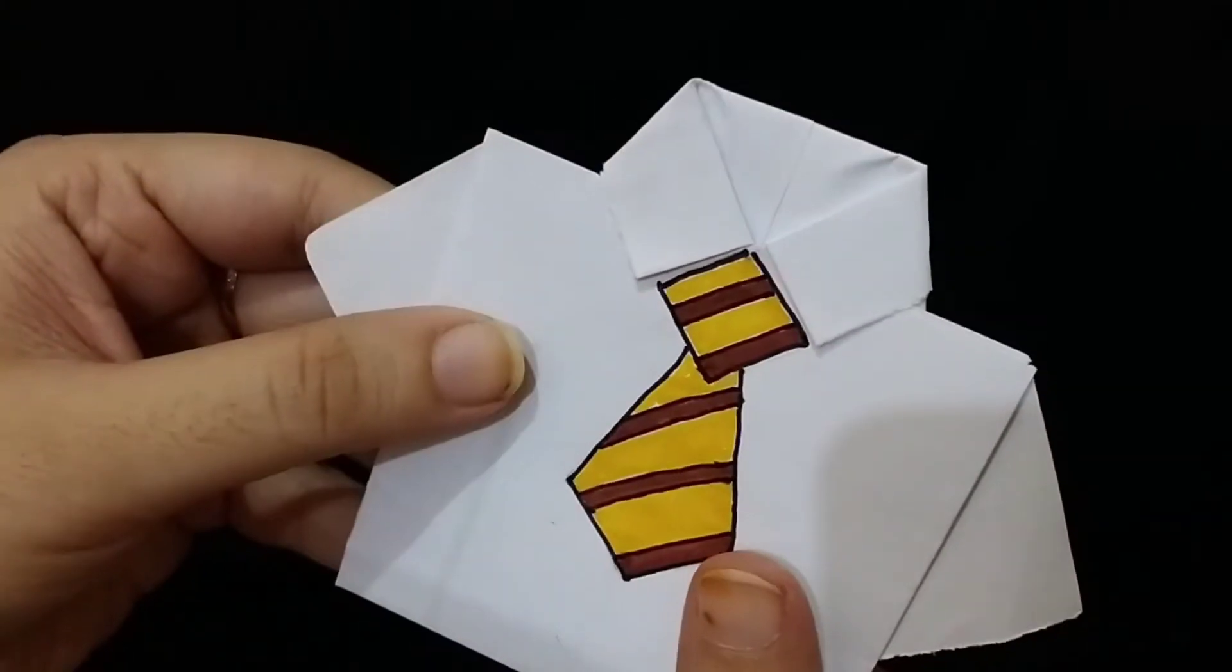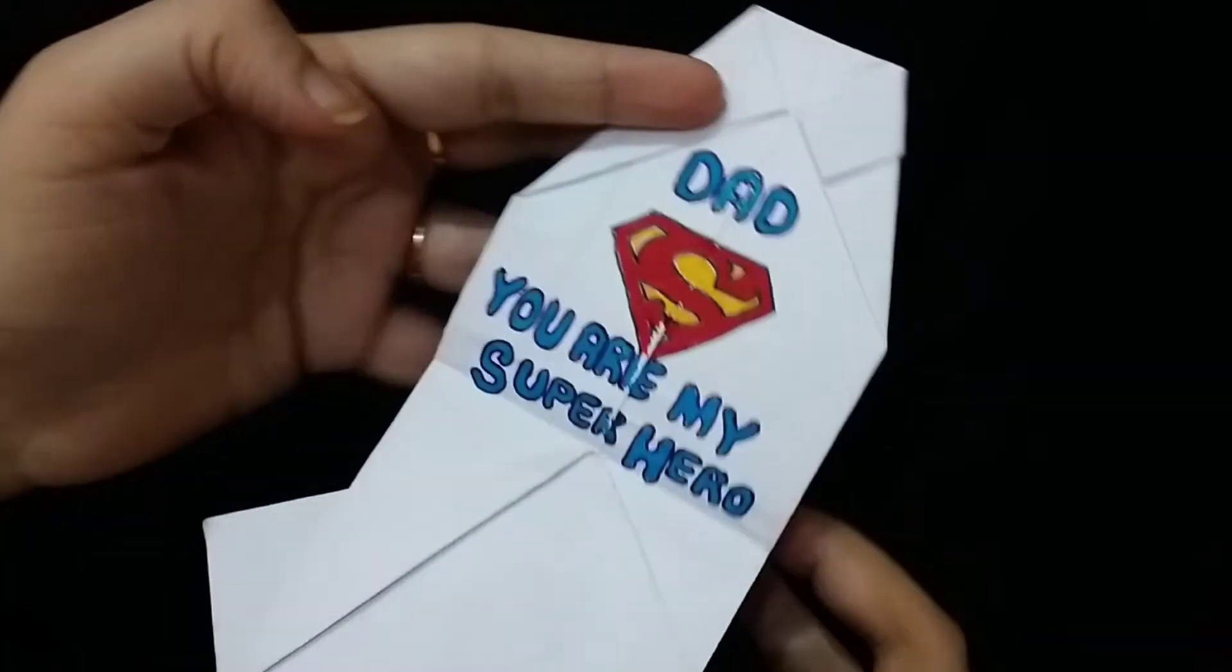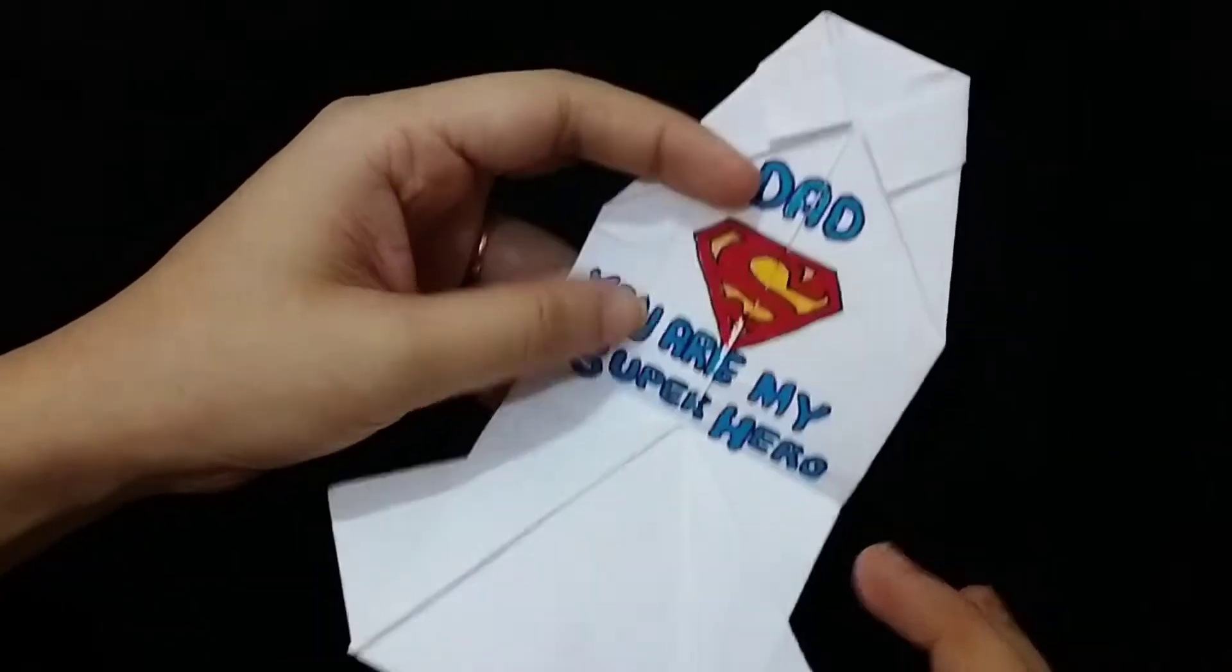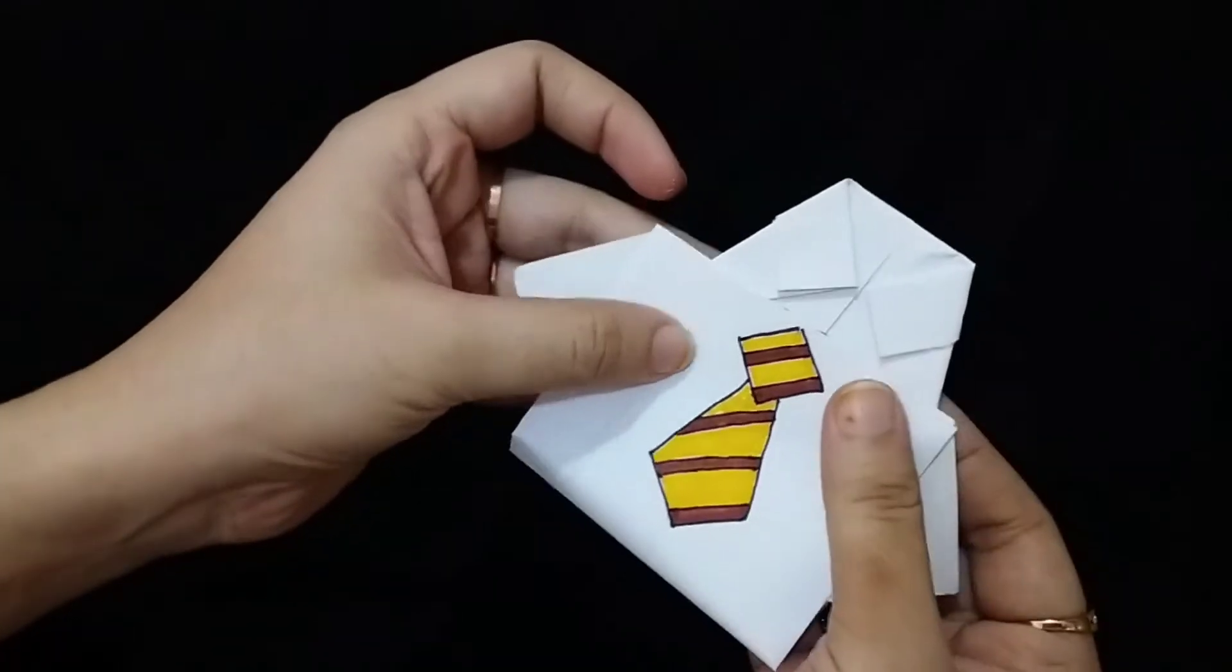Hello everyone, let me show you how to make a two-minute origami card for a father. This is the message that I have written: because Superman wears his shirt under his shirt. So let's begin.